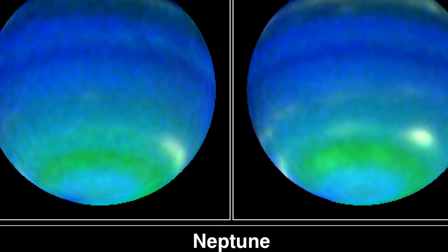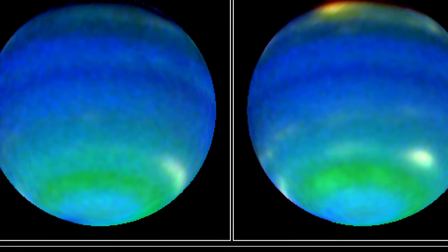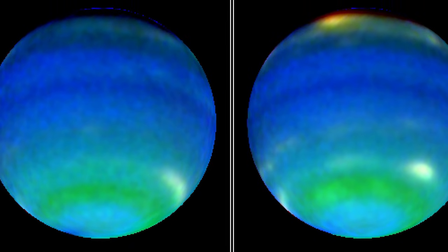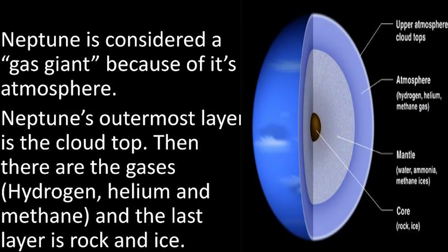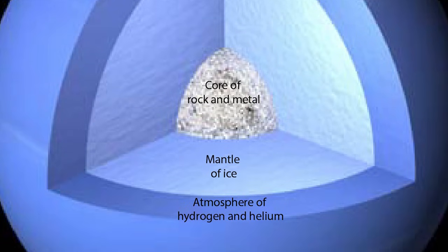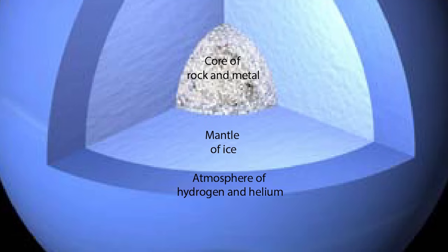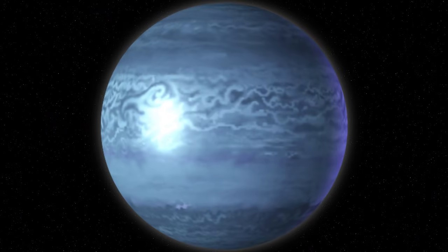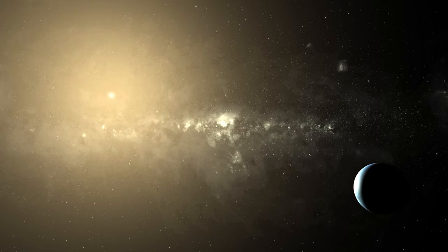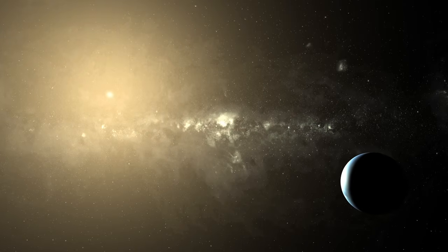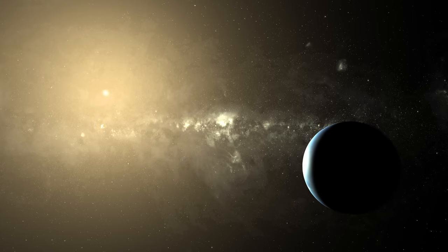We only partially understand why Neptune's temperature fluctuates so dramatically, but astronomers have proposed some intriguing theories to explain this anomaly. They believe that the local chemistry of the planet is responsible for this phenomenon. Neptune has a dynamic atmosphere composed of 80% hydrogen, 19% helium and trace quantities of methane, despite being the most distant giant planet from the Sun. While methane absorbs sunlight and warms the atmosphere, photochemically produced hydrocarbons, such as ethane and acetylene, are potent infrared emitters that chill the stratosphere.